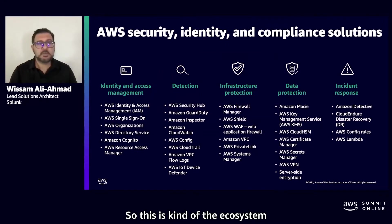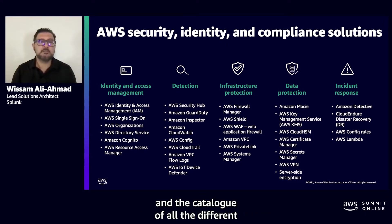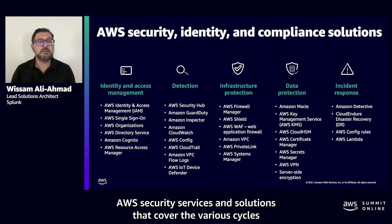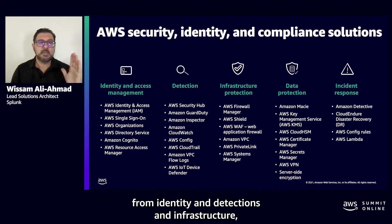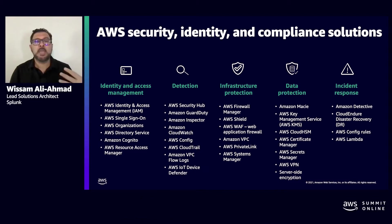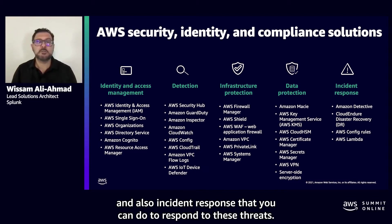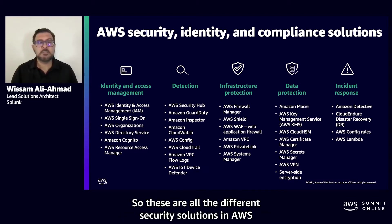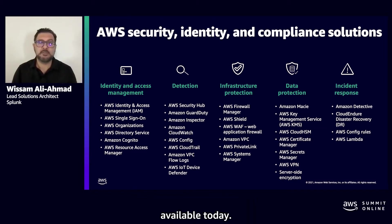This is the ecosystem and catalog of all the different AWS security services and solutions that covers the various cycles — identity, detections, infrastructure protection, and data protection as well, and also incident response that you can do to respond to these threats. These are all the different security solutions in AWS available today.